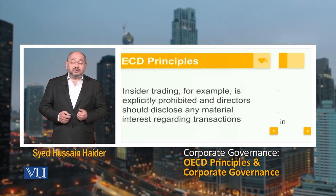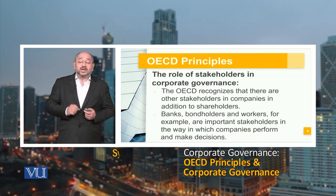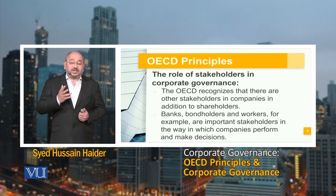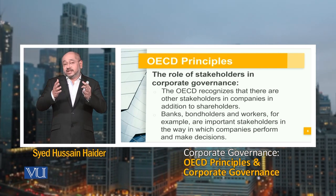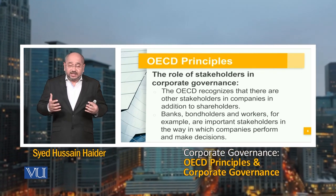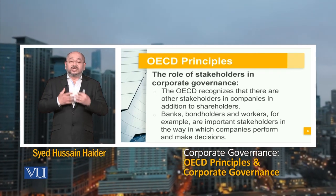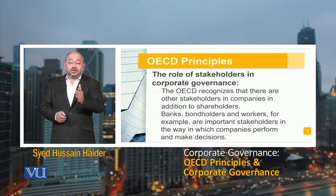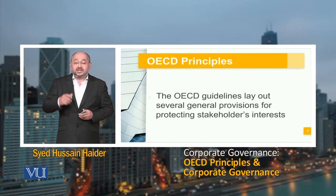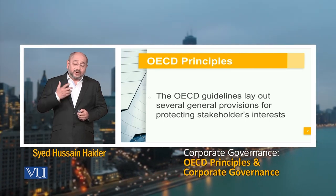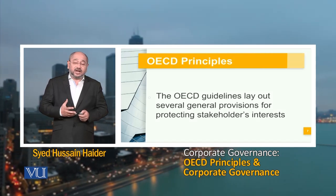The next OECD principle is the role of stakeholders in corporate governance. The OECD recognizes that there are other stakeholders in companies in addition to shareholders — banks, bondholders, and workers, for example, are important stakeholders in how companies perform and make decisions. The OECD guidelines lay out several general provisions for protecting stakeholders' interests, which is the prime concern of any organization — its shareholders first, and then its clients.